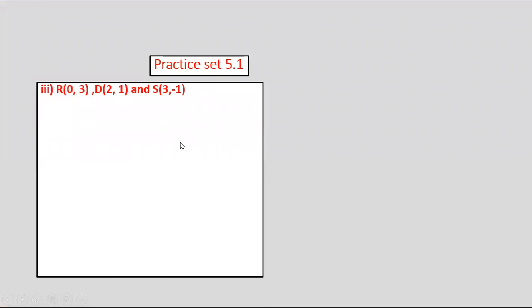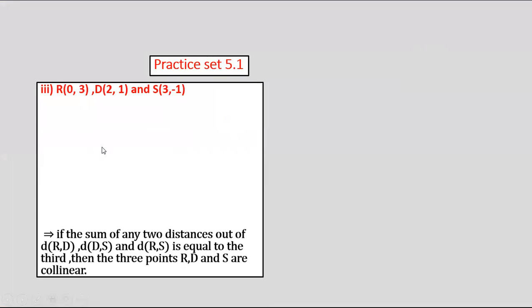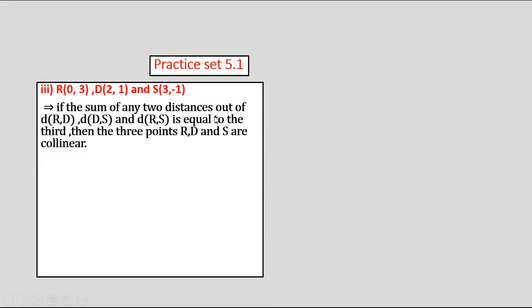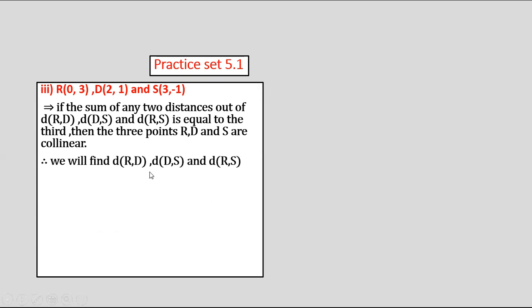Determine whether the given points R(0, 3), D(2, 1), and S(3, −1) are collinear. If the sum of any two distances out of RD, DS, and RS equals the third, then the three points R, D, and S are collinear; otherwise they are not collinear. We will find distances RD, DS, and RS.